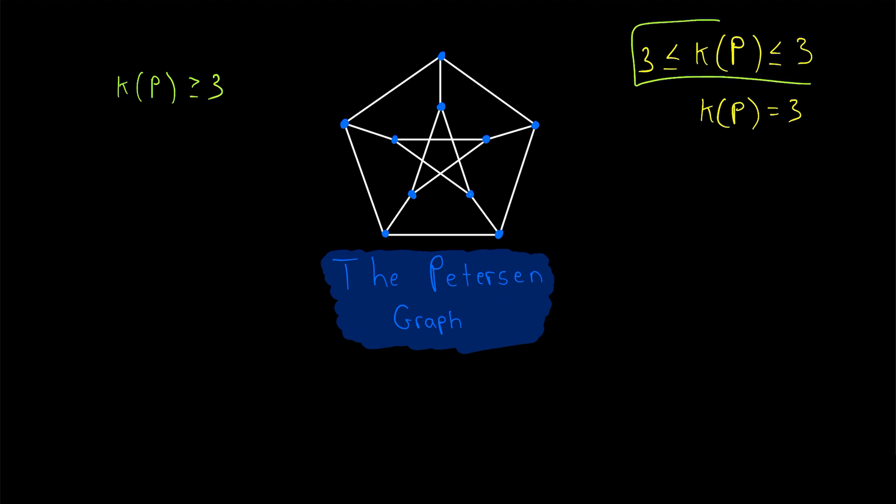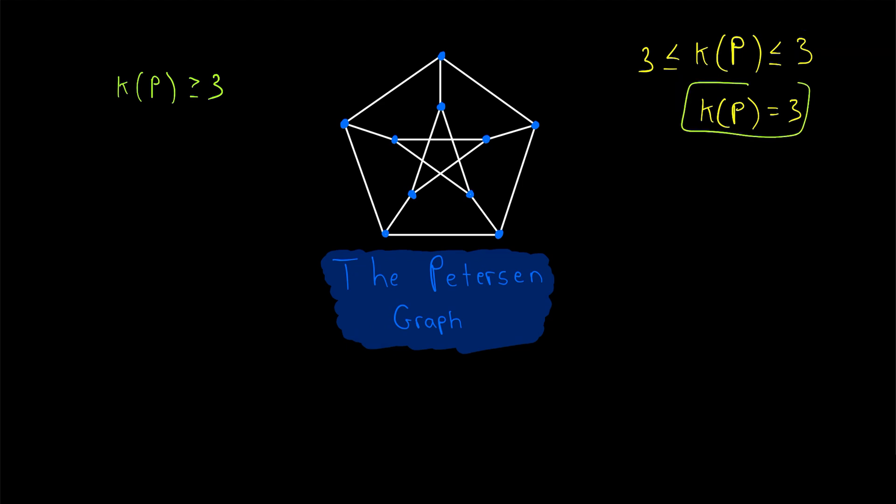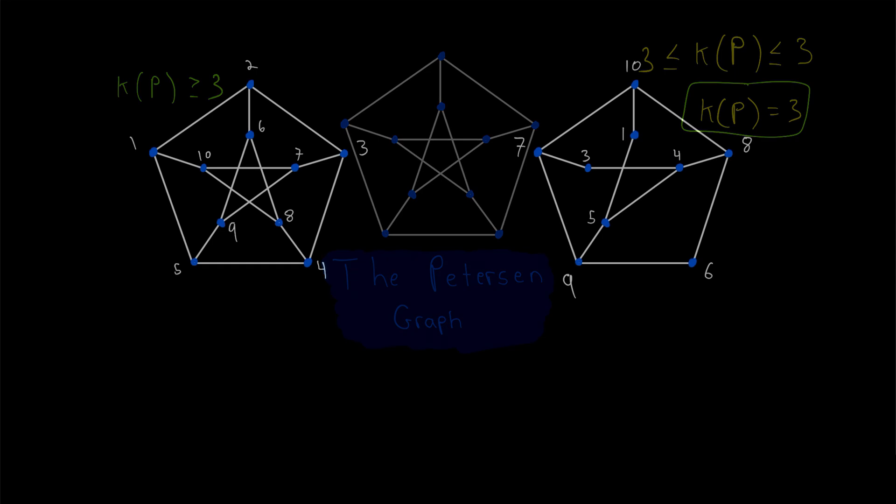We showed that three vertices is sufficient to disconnect the Petersen graph, and we just demonstrated that three vertices is necessary to disconnect the Petersen graph. So the connectivity is three.